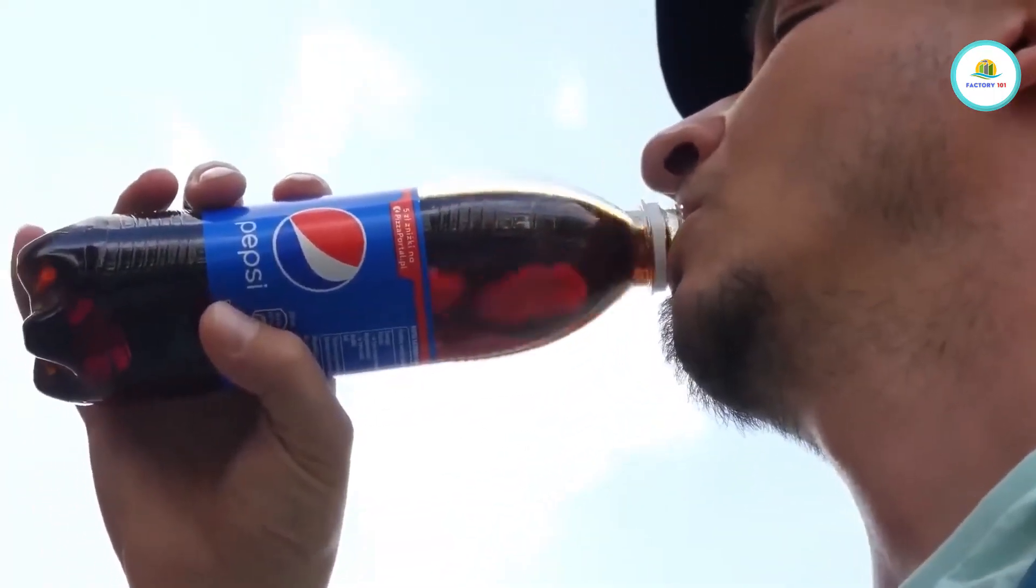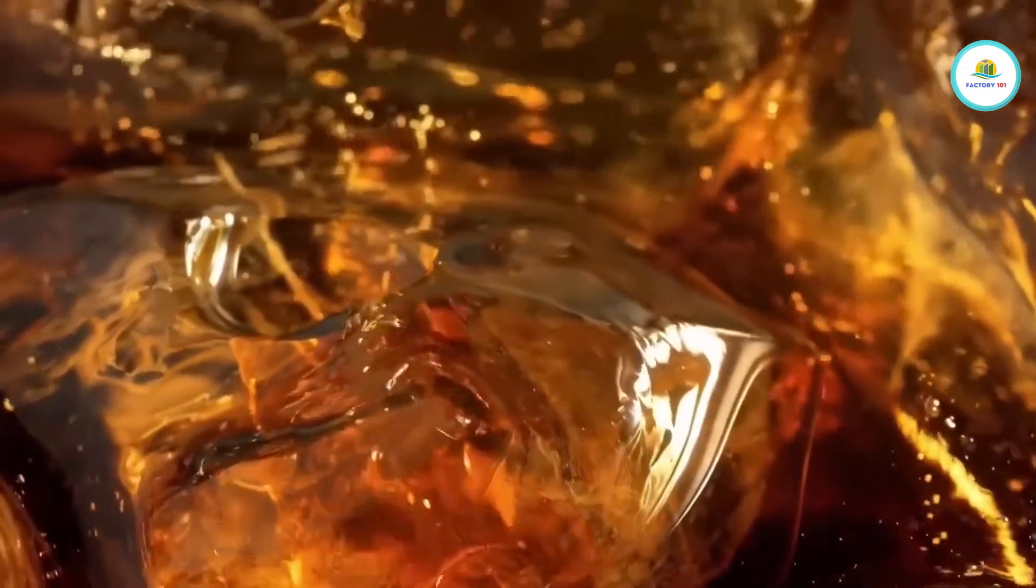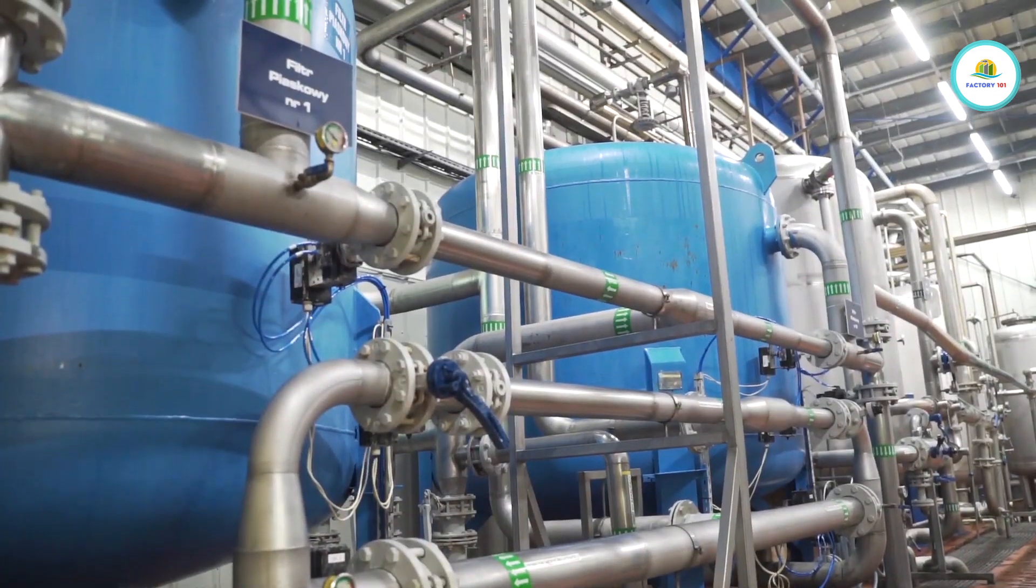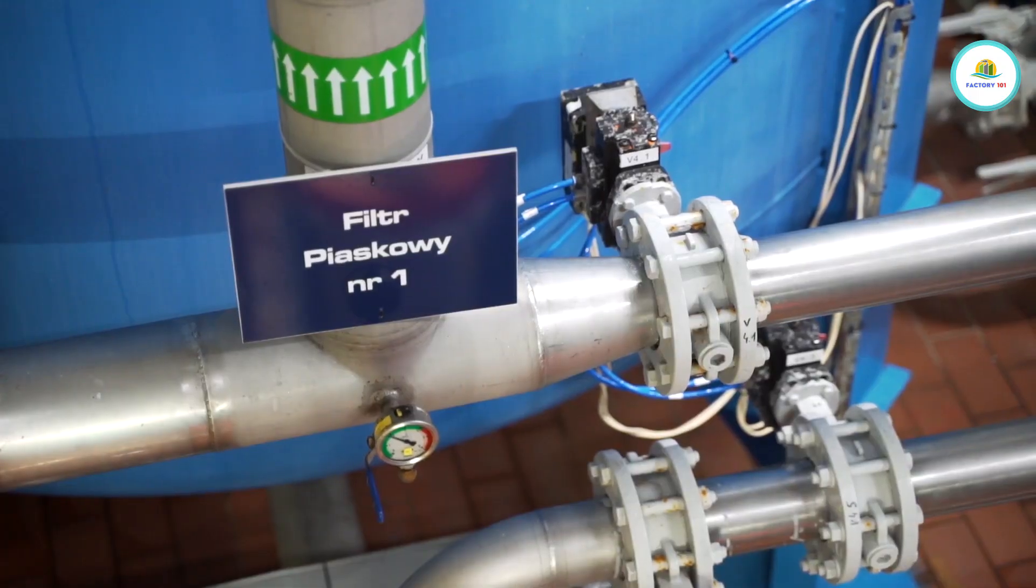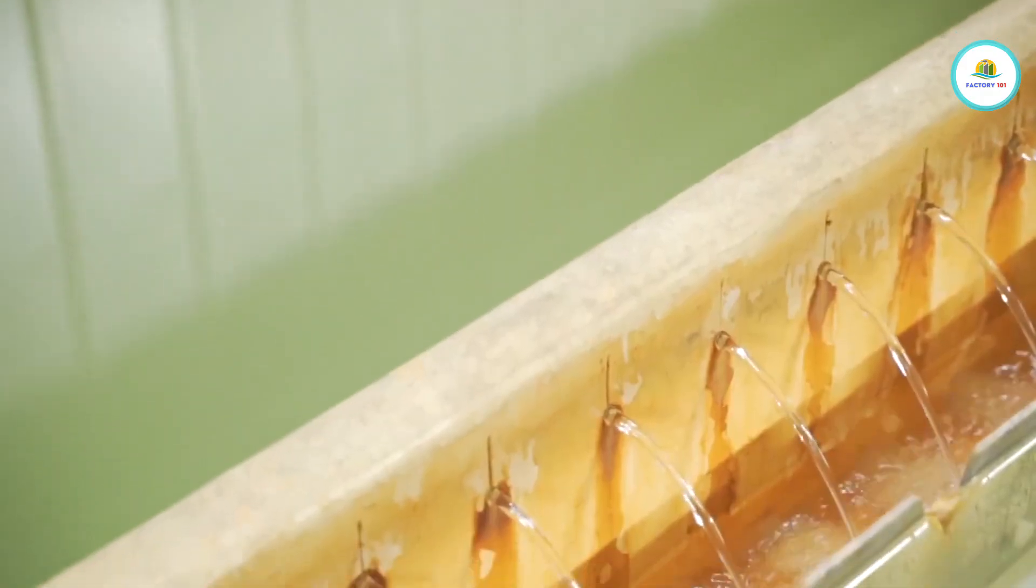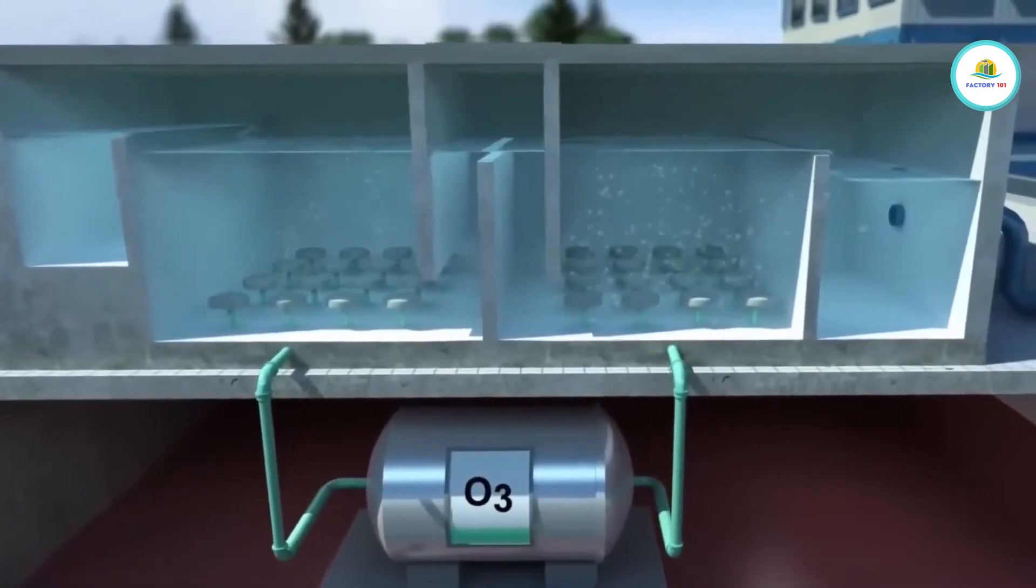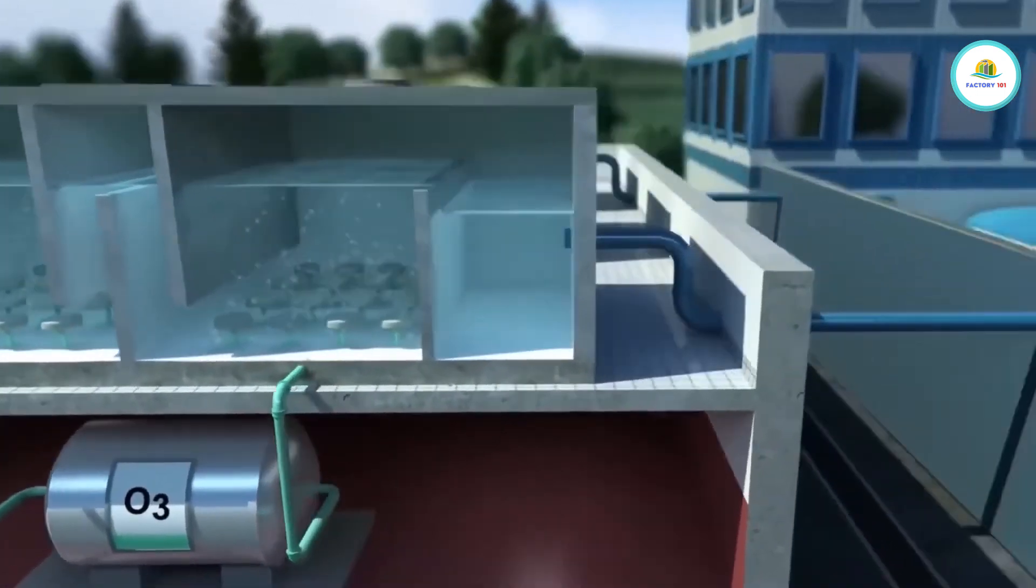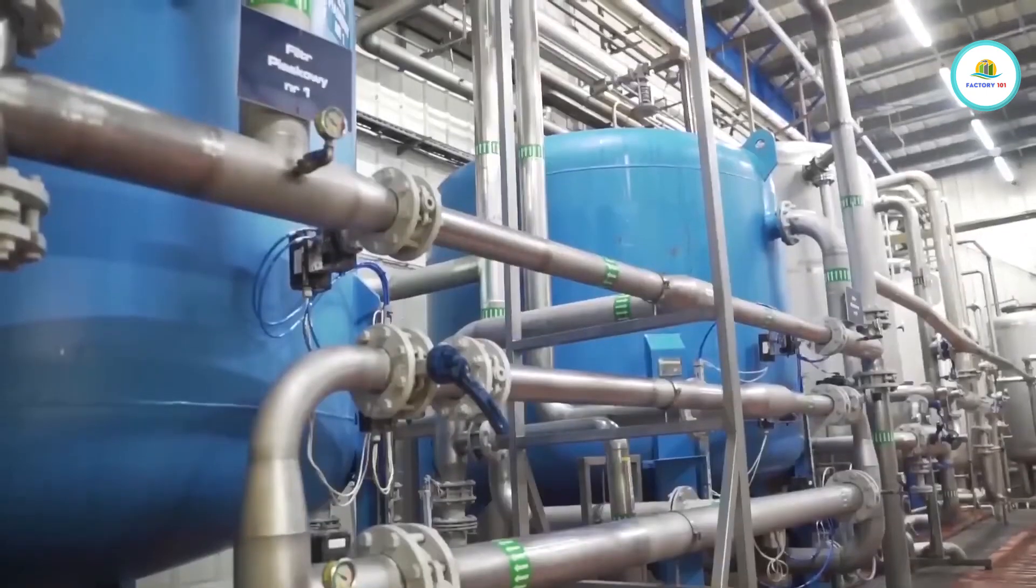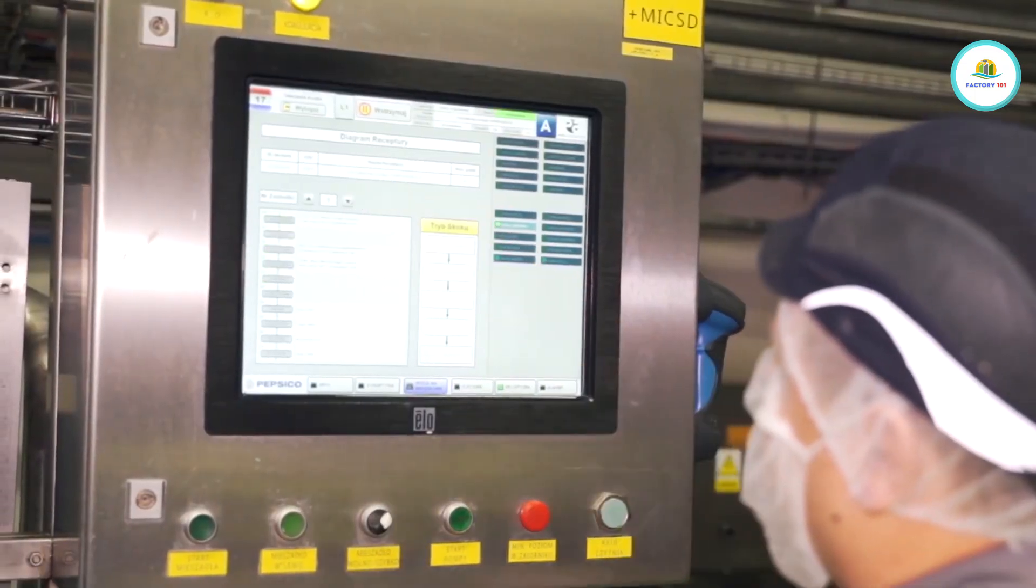Did you know that over 85% of what you drink in a bottle of Pepsi is just water? But not just any water. Pepsi uses ultra-purified, nano-filtered water. Before mixing anything, the water goes through reverse osmosis, carbon filtration, UV sterilization, and demineralization to ensure absolute consistency. Because any impurity can throw off the balance, flavor, and shelf life.